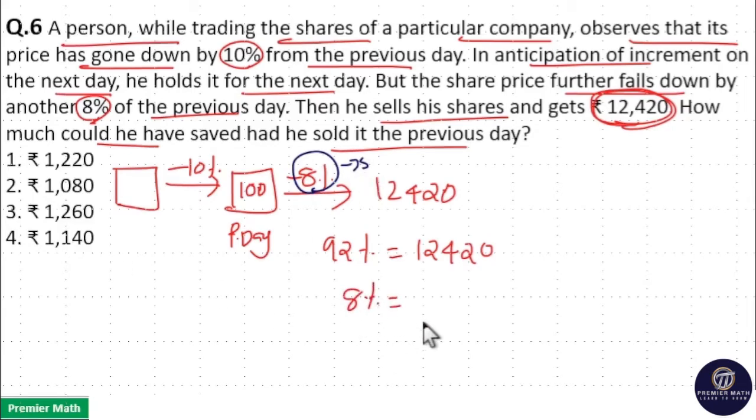Now, 8% value is equal to $12,420 divided by 92 into 8. 4 goes 2 times in 8. 4 goes 2 times in 9. 3 times in 12.